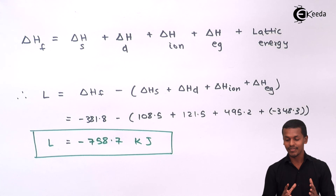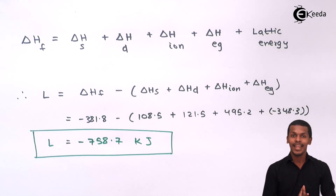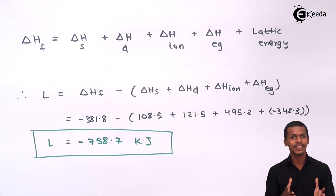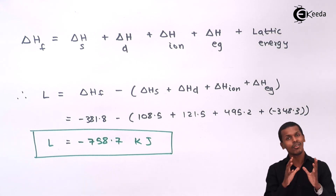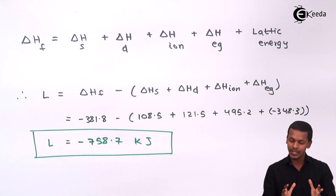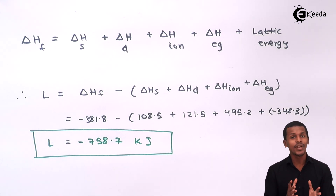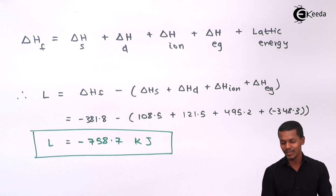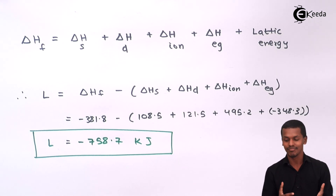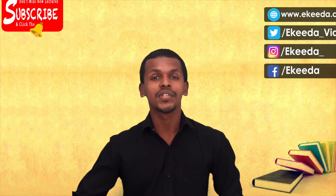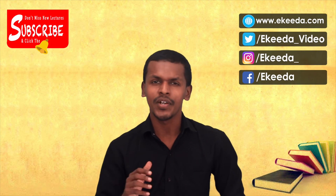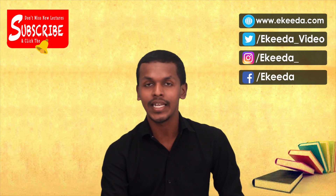This is the lattice energy between sodium ion and chloride ion. NaCl is formed not only by sharing electrons but through this overall thermodynamic process. That was a short thermodynamic treatment of the Born-Haber cycle. Thank you friends for watching this video — I hope you have understood this clearly.